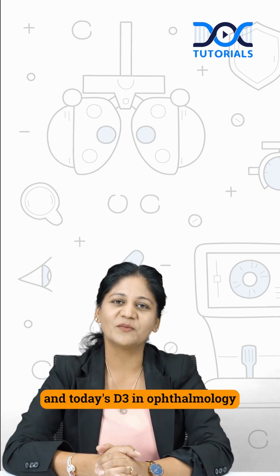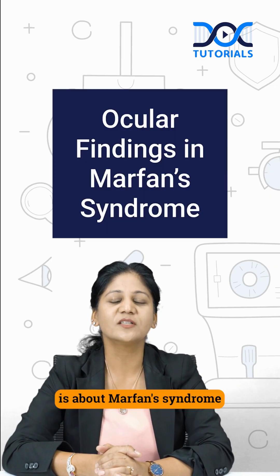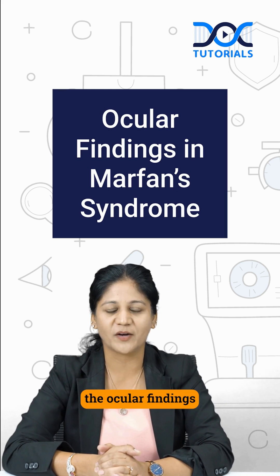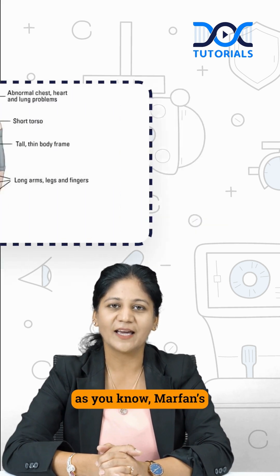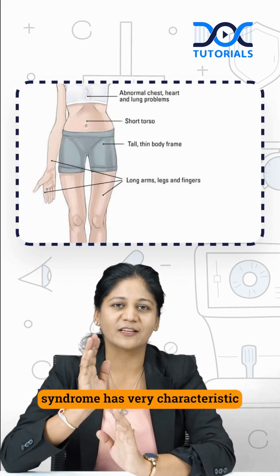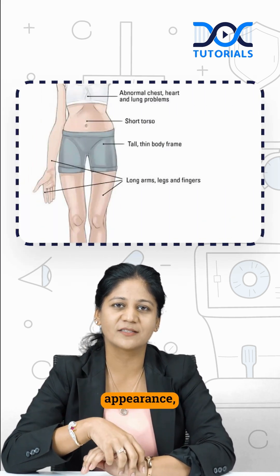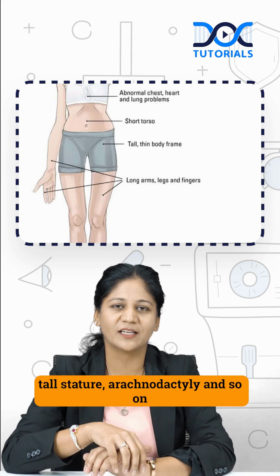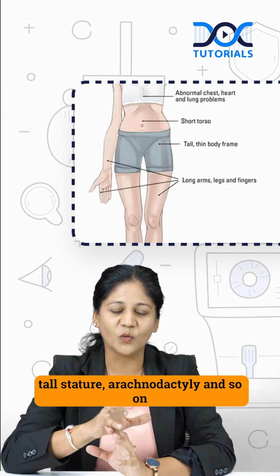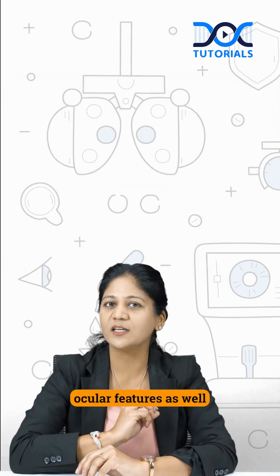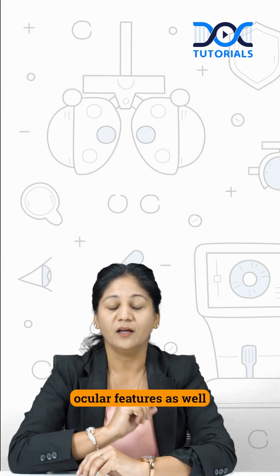Today's D3 in ophthalmology is about Marfan syndrome — the ocular findings. As we know, Marfan syndrome has a very characteristic appearance: tall stature, arachnodactyly, and so on. We also have some important ocular features.